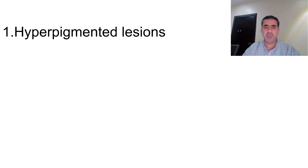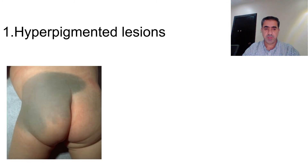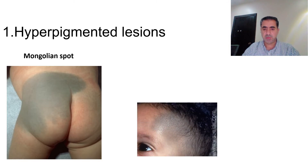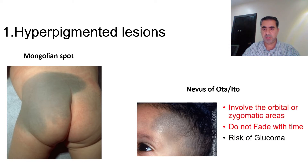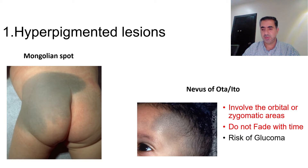Starting from hyperpigmented lesions: this is the typical Mongolian spot with its typical site — one of the benign skin lesions. This one, although it has almost the same color, is called nevus of Ota or nevus of Ito. Once you see this, you have to know it involves the orbital or zygomatic area. It does not fade with time, contrary to the Mongolian spot which fades with time, and it carries a risk of glaucoma — so don't forget to consult your ophthalmologist.